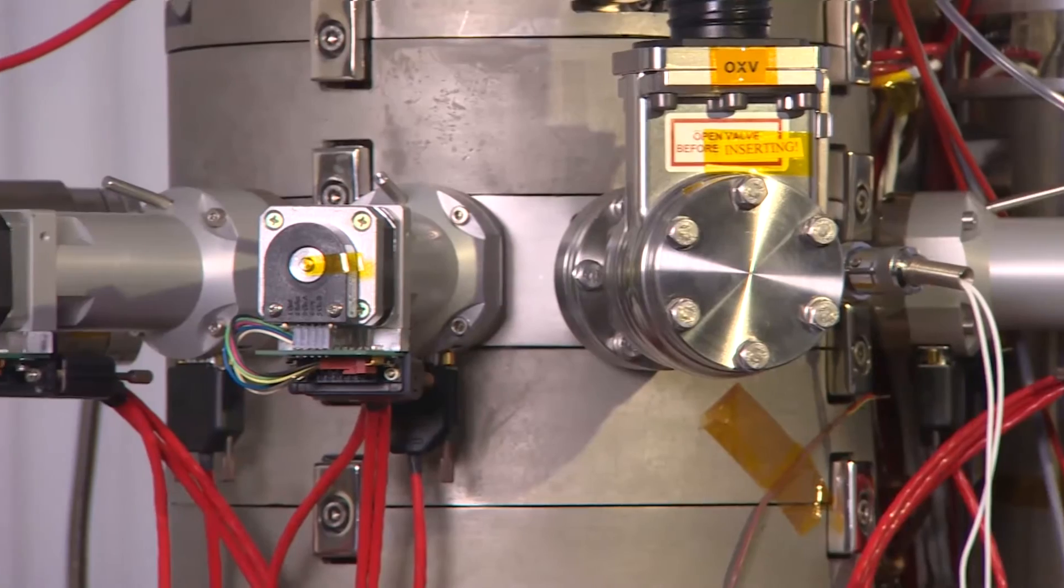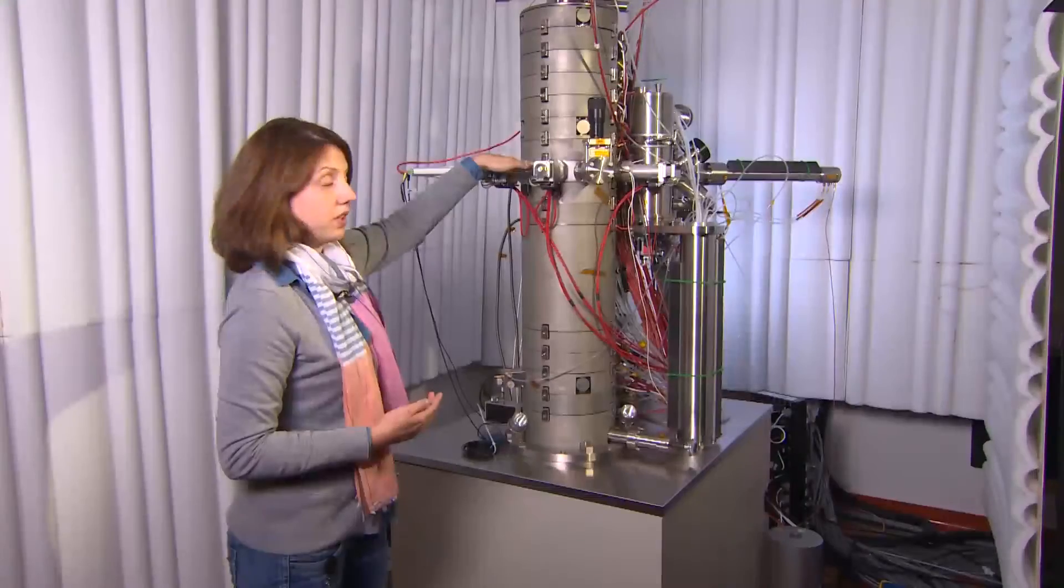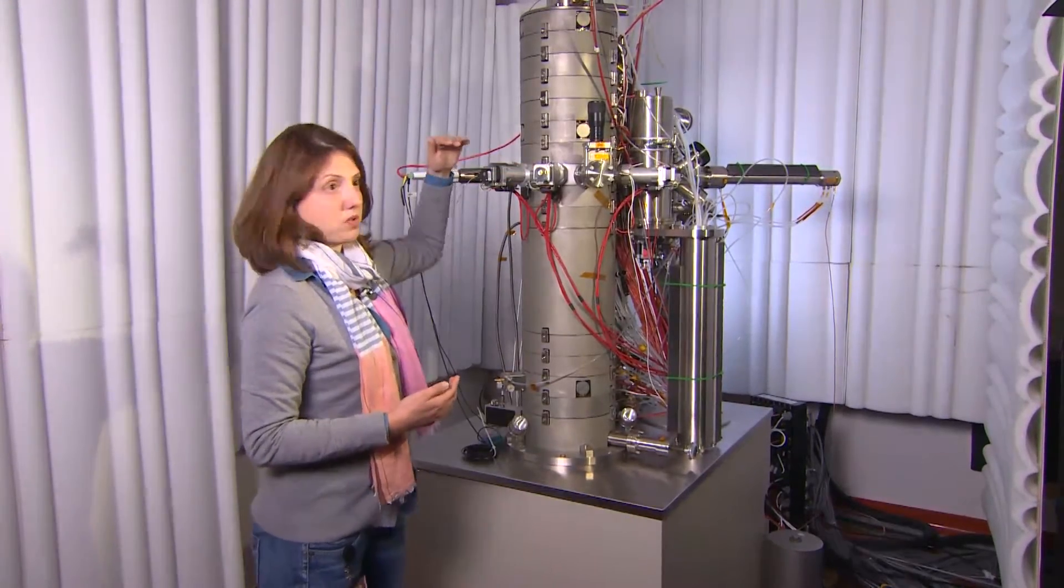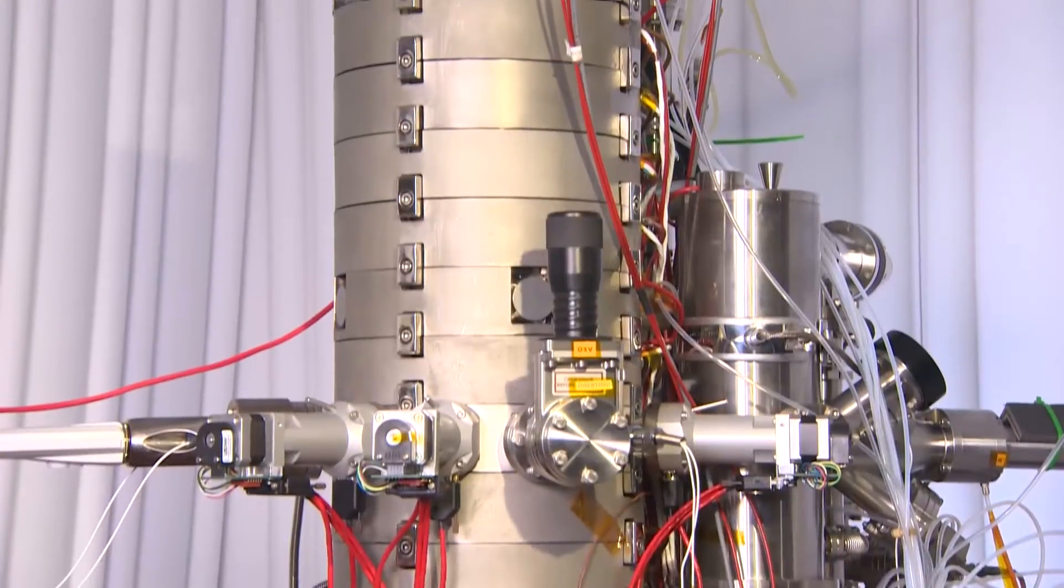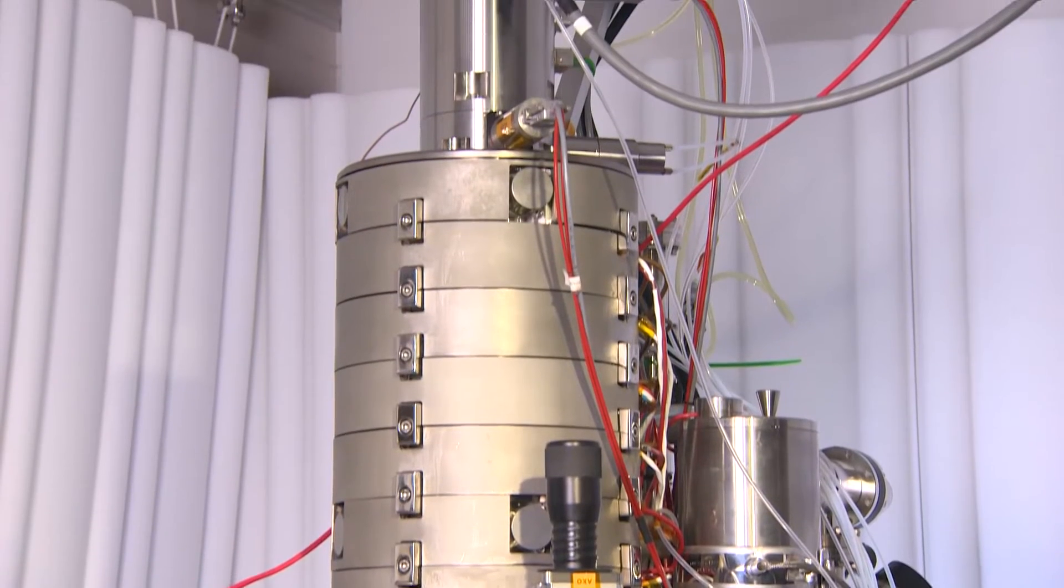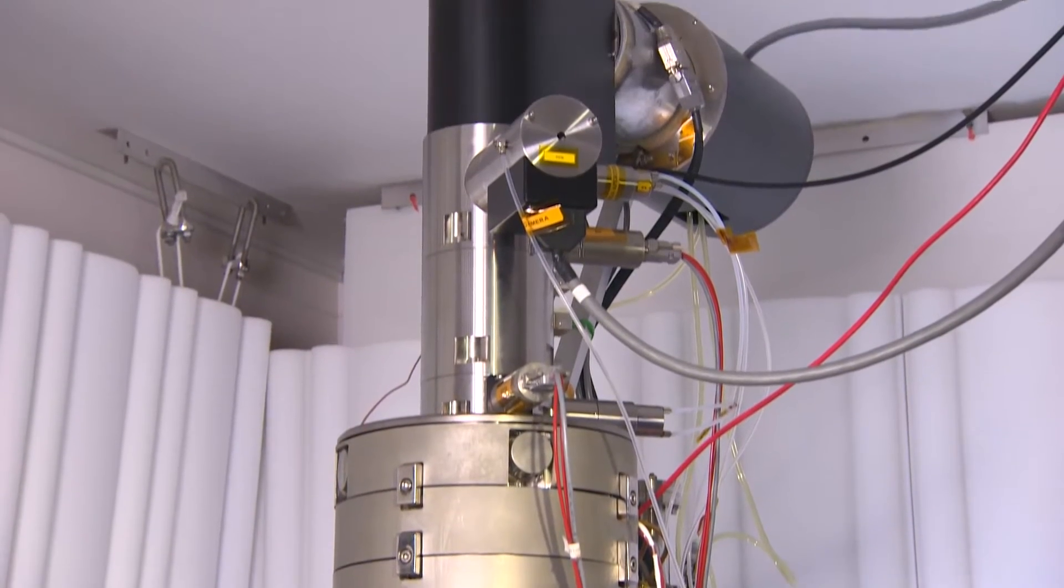The sample itself sits at this level here. The electrons will go through the sample, it's a transmission microscope, and through another set of lenses will be directed to the detector tree. The detectors will collect electrons and form the images.